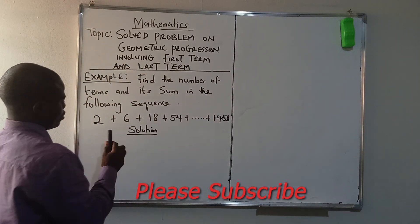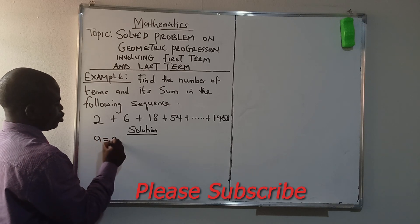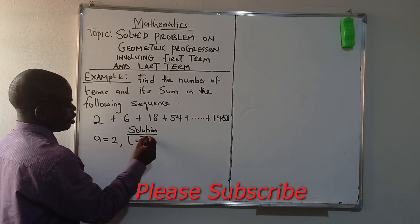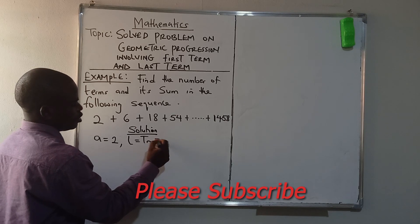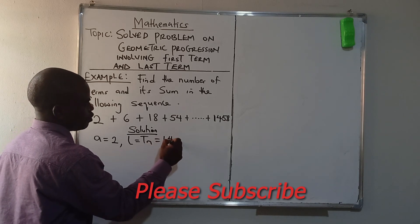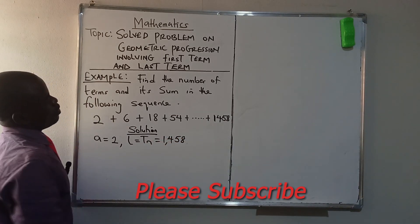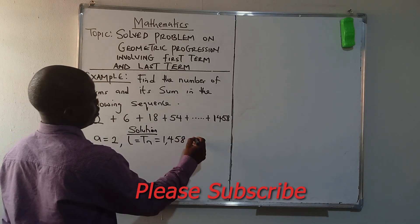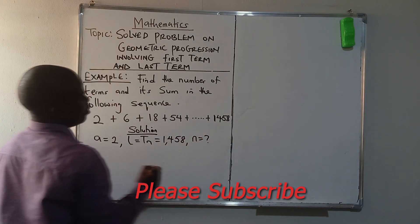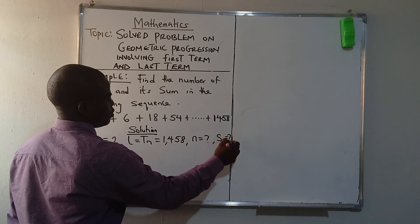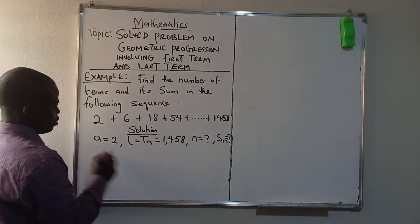Now let's see this: A, which is the first term, is 2. The last term is 1458, and we are looking for the number of terms. We are looking for also the sum of the number.